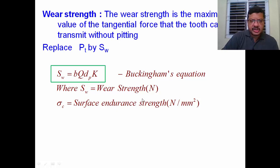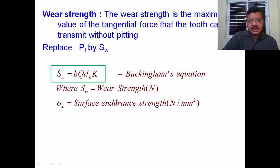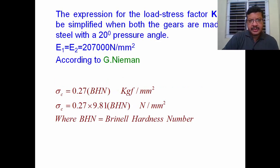Where Sw is the wear strength in Newtons, and σc is the surface endurance strength in N/mm². The σc value is contained within k. For finding k, a lengthy equation exists: k = σc²·sin α·cos α·(1/E1 + 1/E2) / 1.4. To simplify this, G. Neiman assumed a pressure angle of 20° and that both gears are made of steel.